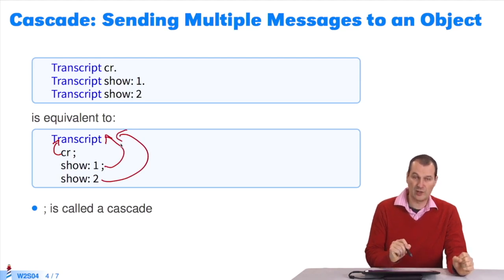I'll say this again, as it's unusual. I send the first message normally. Instead of using a period, which is a separator, I use a semicolon. It means every other message must be sent to the same receiver. Show one is sent to the same receiver. Show two is sent to the same receiver.